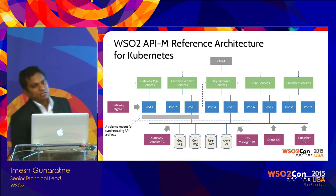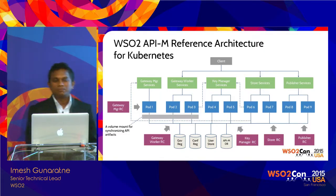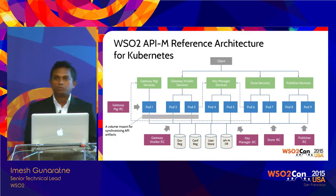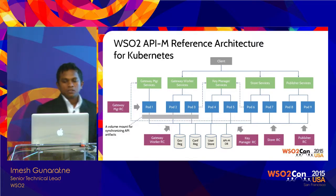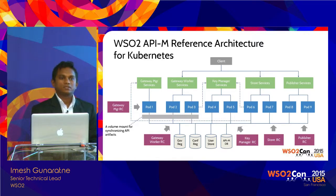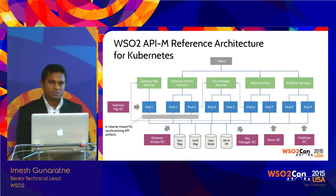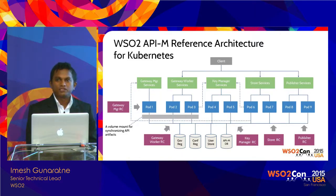For a much more complex scenario, consider API Manager. API Manager itself has four main components: the gateway, key manager, publisher, and store. The gateway also divides into worker-manager separation, so there are actually five sub-clusters for API Manager. To deploy API Manager on Kubernetes, we create replication controllers for each cluster, a set of services for each cluster, and then do database mounts.